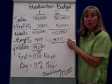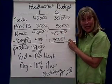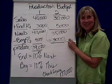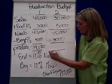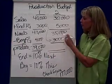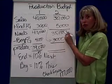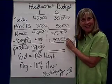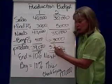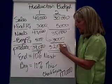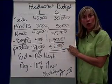Now, 3,000 of those bottles of water are from beginning finished goods inventory. So how many units do I need to produce? 35,000 minus 3,000 is 32,000. So we'll make 32,000 bottles of water.